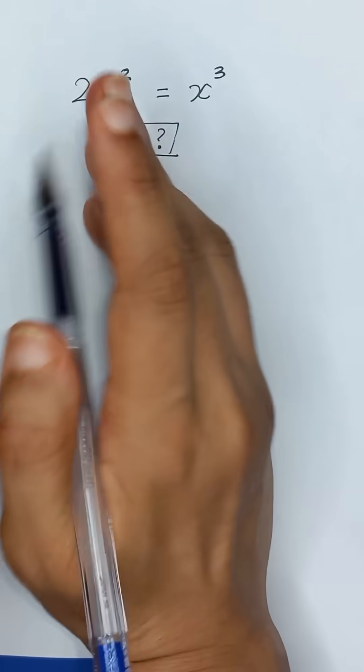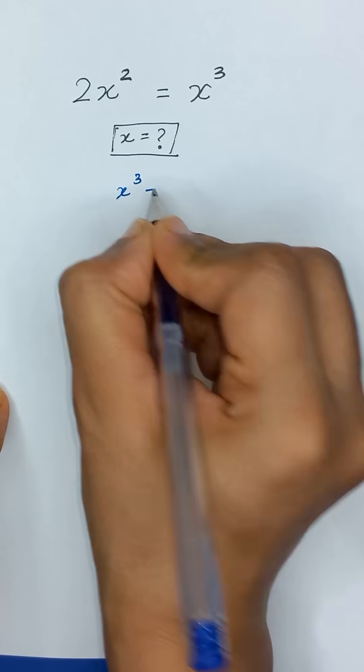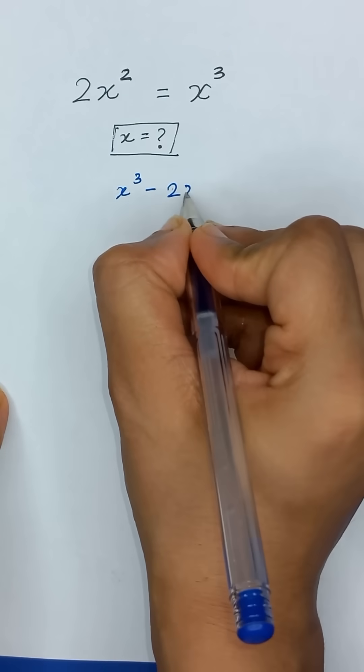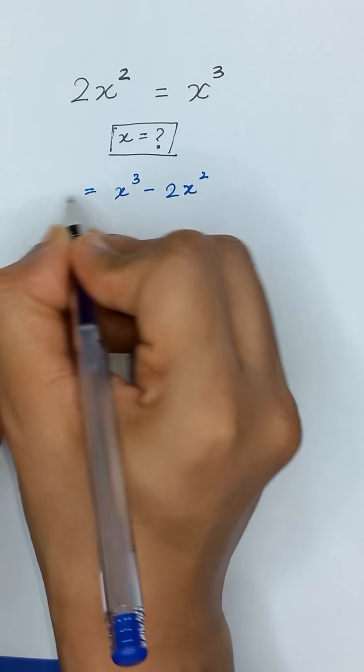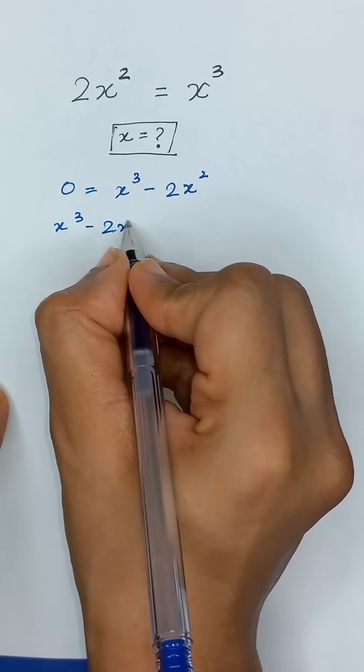I will take this 2x² to the right hand side, so it will become x³ minus 2x², which will be equal to 0.